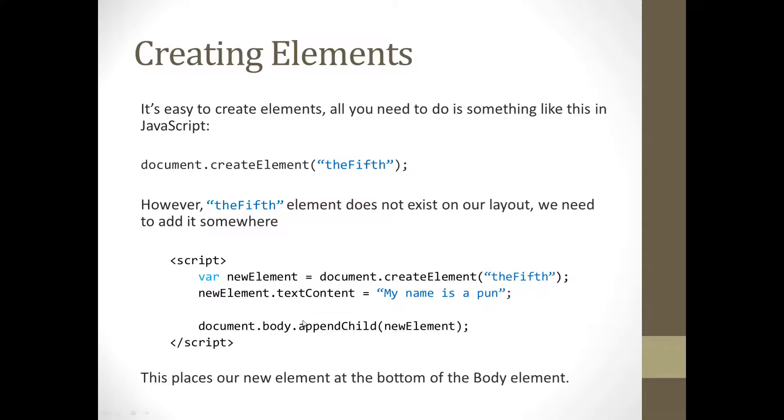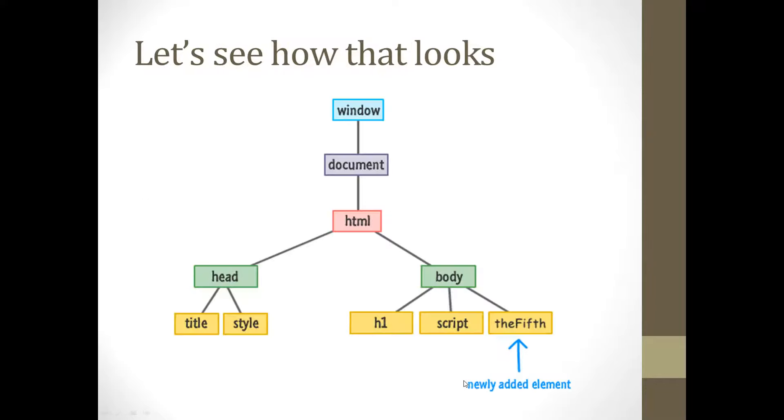If we wanted to add it somewhere, we have to do something like document, body. So, in this case, a body, because that's part of the body section here. It's part of this section, so body. appendChild, which I'll cover a bit more in a little bit. A new element. So, we've created a new element here, which is our variable. And that is part now of the body thing, of the body child thing. We'll look at that in just a second. The place is our new element at the bottom of the body element. So, here it is.